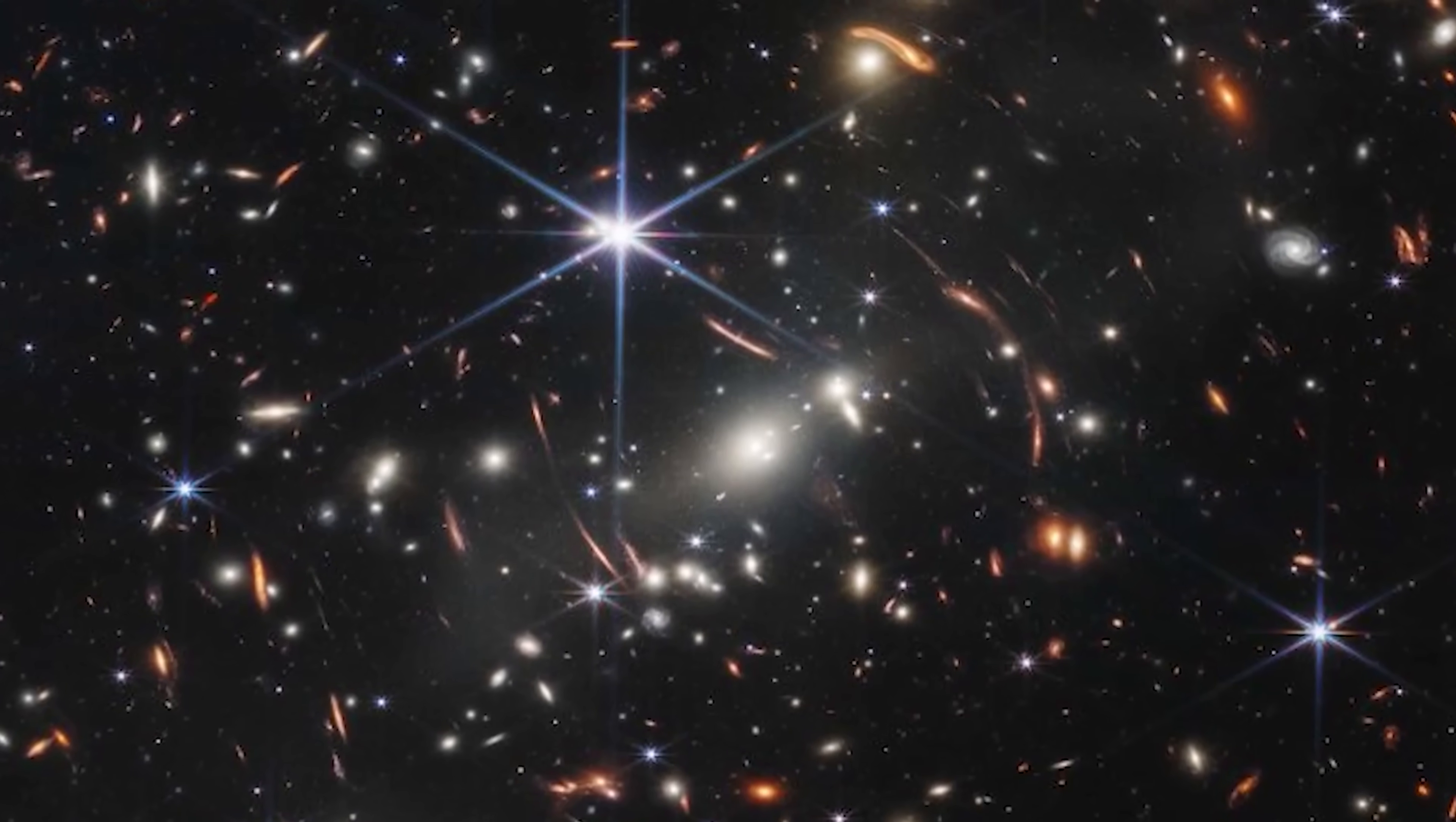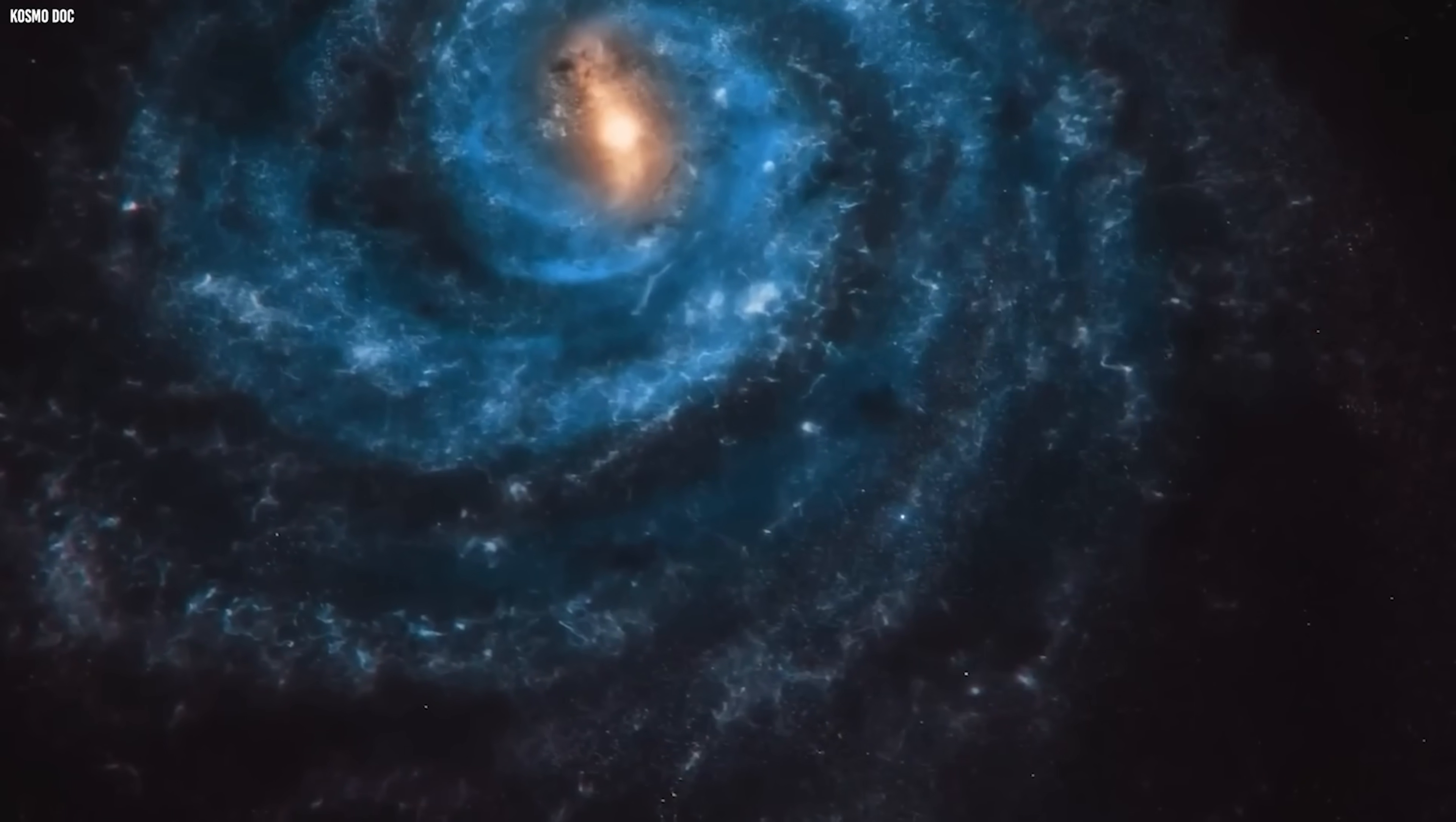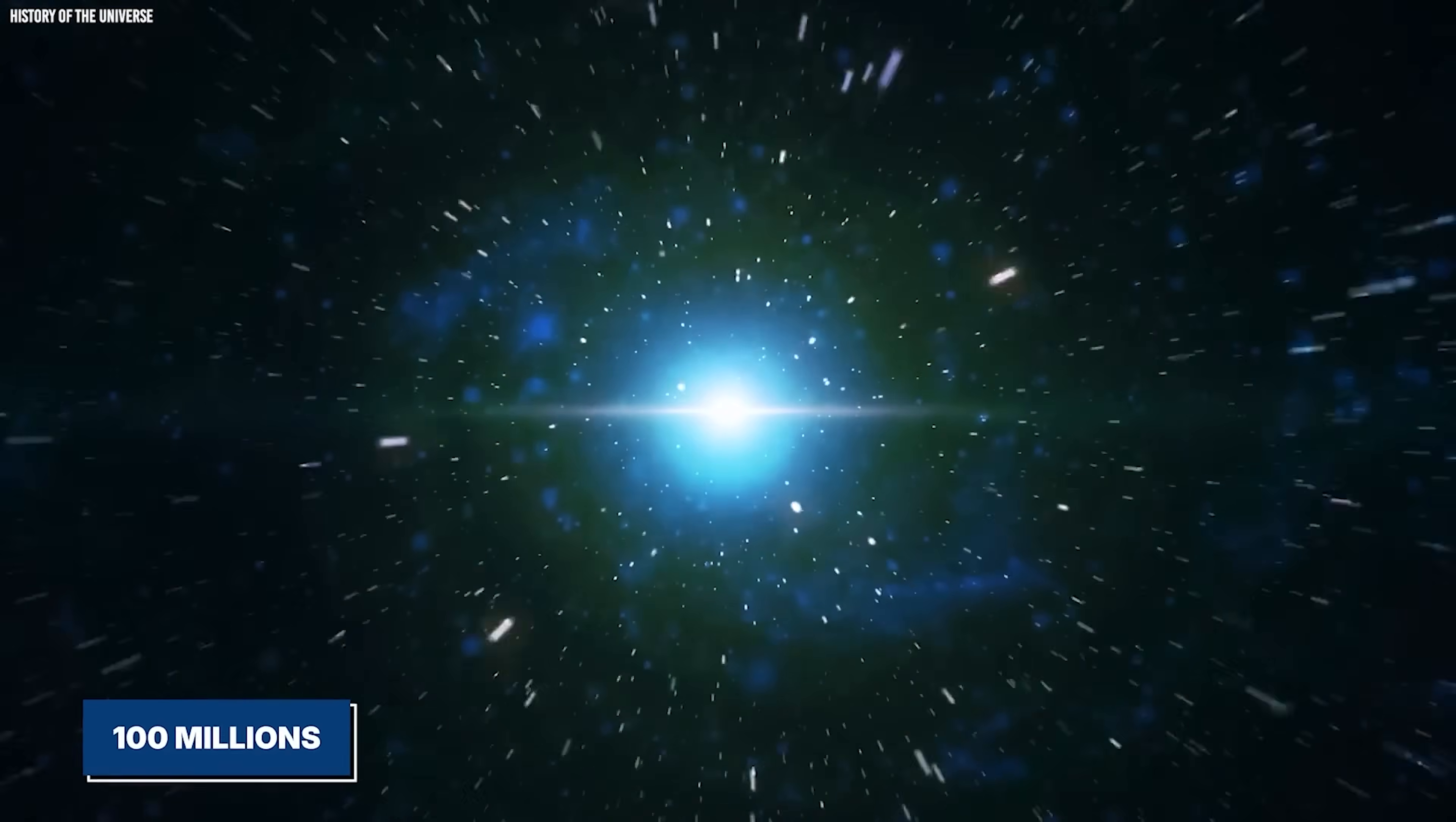Webb's earliest deep-field images revealed galaxies forming at redshifts of thirteen, fourteen, even seventeen. That means the light from those galaxies began its journey more than 13.4 billion years ago, when the universe was less than 3% of its current age. But the strangest part wasn't the distance. It was the structure. These galaxies appeared organized, luminous, enriched with heavy elements. Some even showed hints of rotation and disk-like forms, features that should have required hundreds of millions of years to develop.